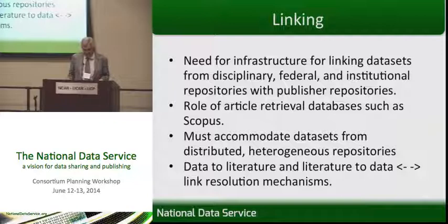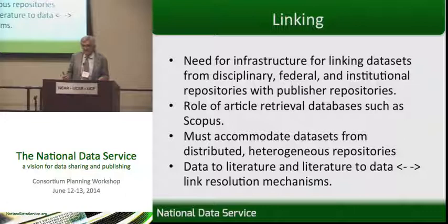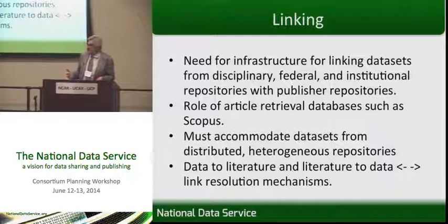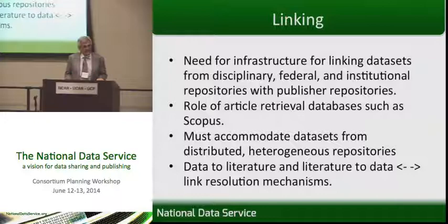When we talk about search and discovery, very often we talk about major A&I services. The demonstration I'm going to do here, or the project I'm talking about, uses Elsevier Scopus. Scopus covers about 26,000 journals, has 50 million articles. It is a major A&I service that covers all areas of science, engineering, biosciences, medical sciences, and social sciences.